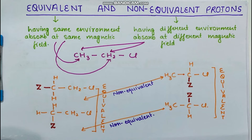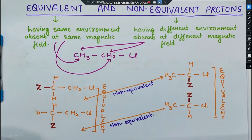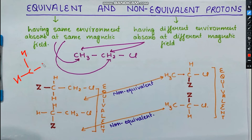What are equivalent and non-equivalent protons? Equivalent protons are those having the same environment and absorbing at the same magnetic field. Non-equivalent protons have different environments and absorb at different magnetic fields. For example, in CH₃ all three protons are attached to the same carbon and share the same environment, so they are all equivalent. Similarly, two hydrogens on a CH₂ that each have CH₃ groups on one side and a Cl group on the other side are equivalent.